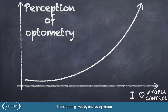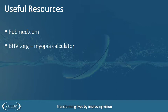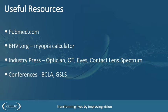Some useful resources I'd recommend: pubmed.com is a great way to get access to peer-reviewed journals either in full text or abbreviated. The bhvi.org, the Brian Holden Visual Institute, has a great myopia calculator usable by the public or profession, and they also do training programs. We've also got resources in the optical press: Optician, OT, Eyes Magazine, and Contact Lens Spectrum with a huge back archive of specialist contact lens articles. At conferences, the BCLA and Global Specialty Lens Symposium are the two big ones involving myopia control, with online availability too.